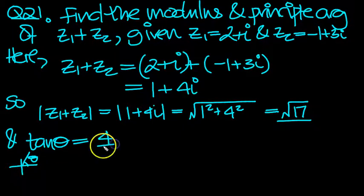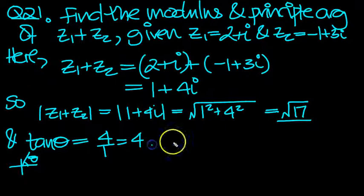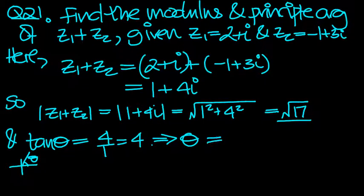So tan theta is 4 over 1, which equals 4. So that implies then that theta is equal to... We need it in radians.